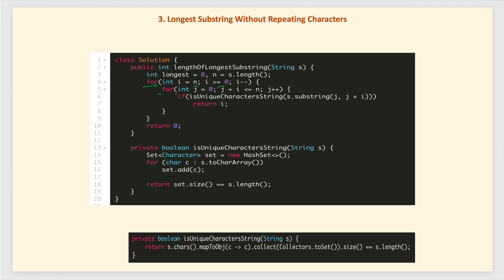We try all possible substrings starting from index 0, moving one by one until j plus i is less than n. Then we call a helper method to check whether the substring from j to j plus i is unique. One way is to create a custom set, fill it with characters, and check if the set size equals the substring length. If you prefer Java 8, you can write this as a one-liner using streams: convert characters, map to Character objects, collect into a HashSet, then check the size.